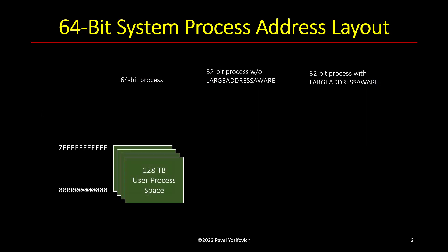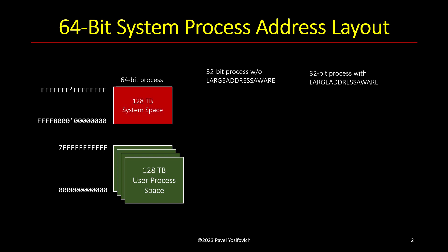Let me summarize using some slides. For a 64-bit process, things are simple: we have 128 terabytes per process — a very large address space. Of course, it doesn't mean the process can use all of it, because you would need RAM plus page files approaching that size, which is not feasible today. The upper 128 terabytes of the address space is known as system space: this is where the kernel and device drivers live, along with all kernel data structures.